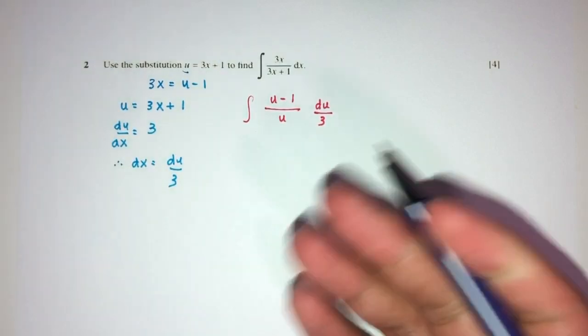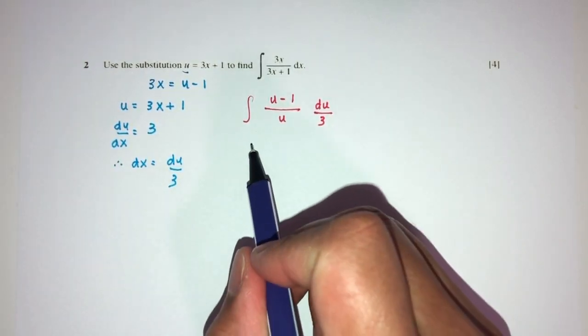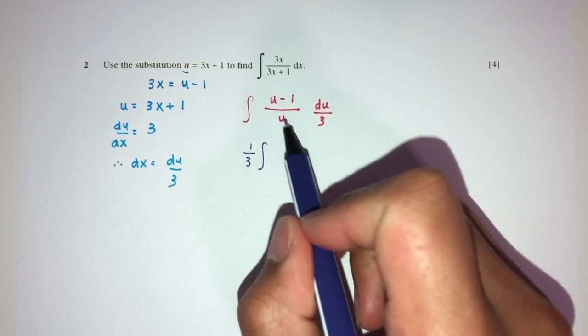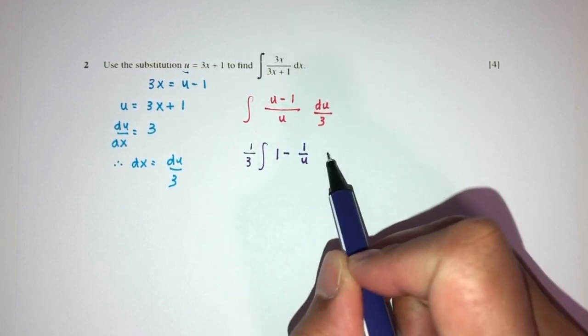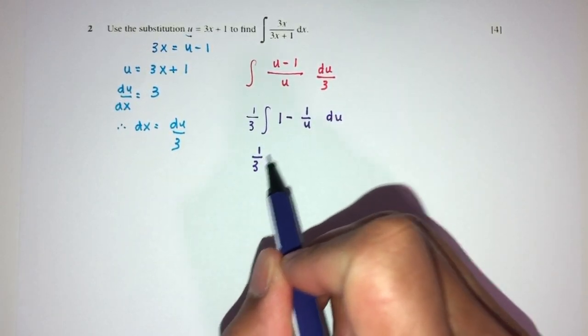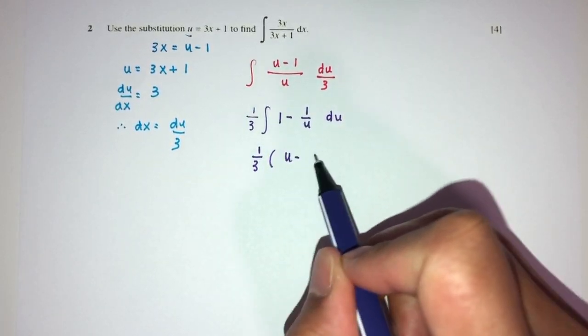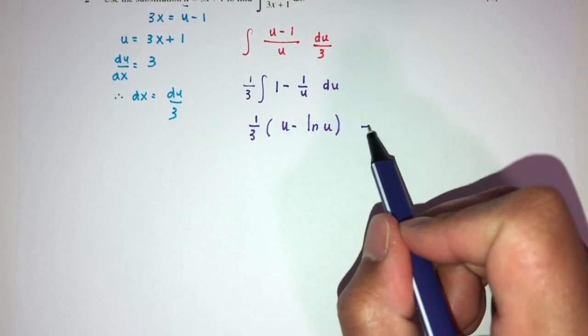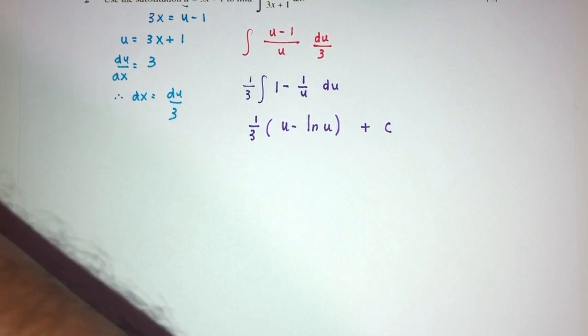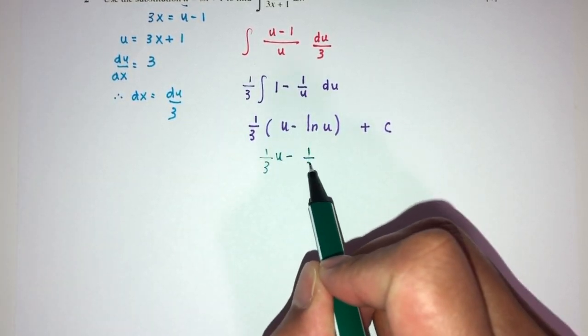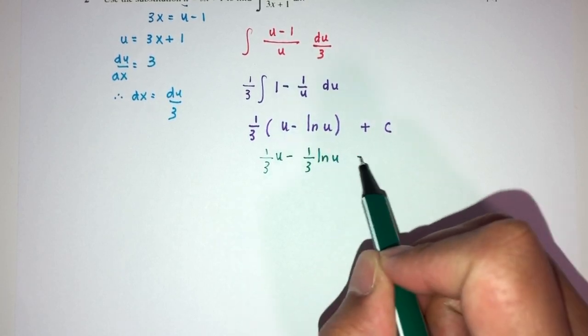The 3, it is only a multiple, we can leave this outside. We can break this down: u divided by u is 1 minus 1 over u du. This will be 1 over 3 times u minus ln of u. You have to write plus c at the end for the constant of integration. And then we can expand: 1 over 3 u minus 1 over 3 ln of u plus c.